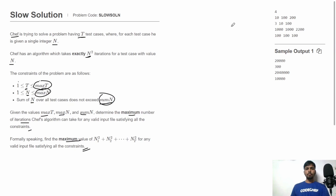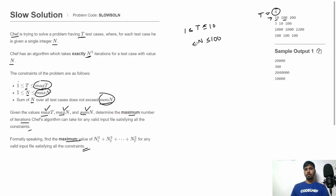In the input, first we get the total number of test cases T, and for each test case we get three integers: max_T, max_N, and sum_N respectively. For example, max_T=10 means total test cases ≤ 10, max_N=100 means N ≤ 100, and sum_N=200 means the sum of all N values should not exceed 200.